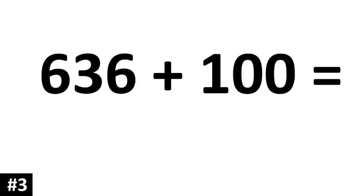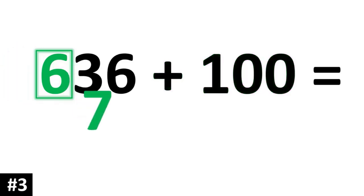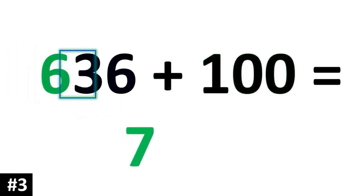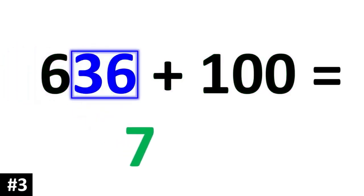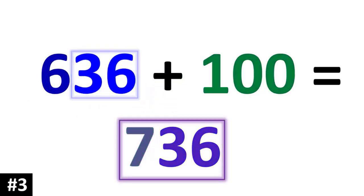636 plus 100. The hundreds digit goes up by 1, so this 6 is going to become a 7. The other numbers stay the same, and we have 736.